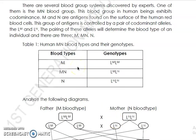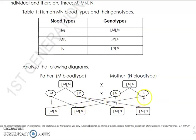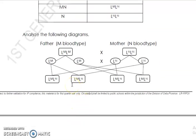Let's apply what we've learned. Remember that M is co-dominant over N, and N is co-dominant over M. For example, when the father has blood type M, the genotype is LM LM. When the mother has blood type N, the genotype is LN LN. Combining them in a Punnett square: LM combined with LN gives LM LN for all four offspring.